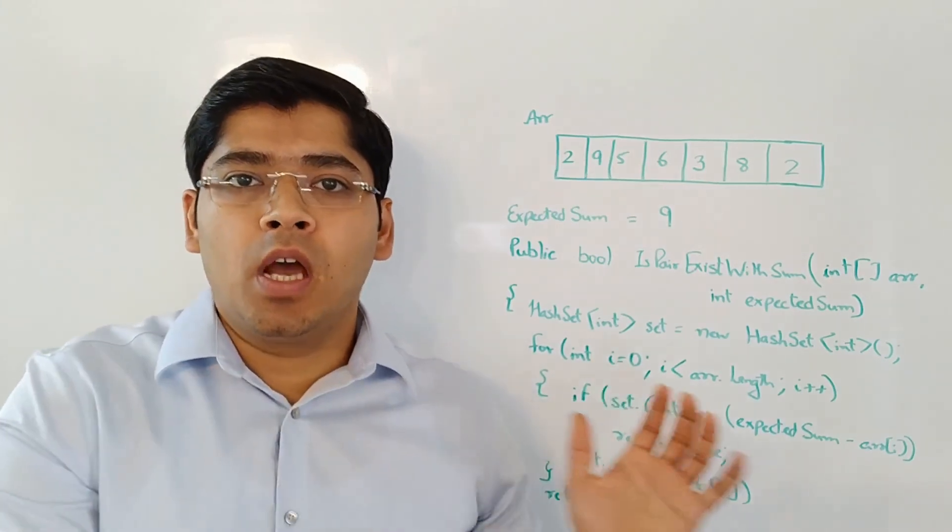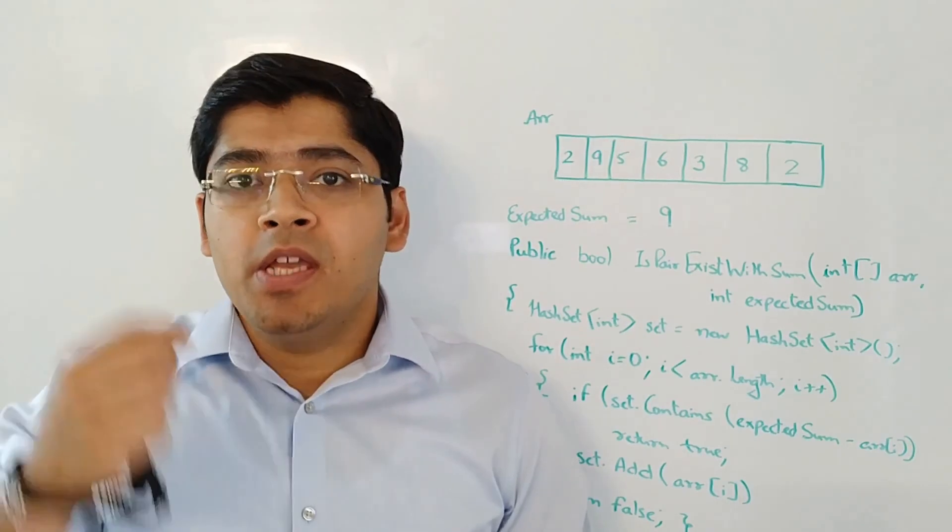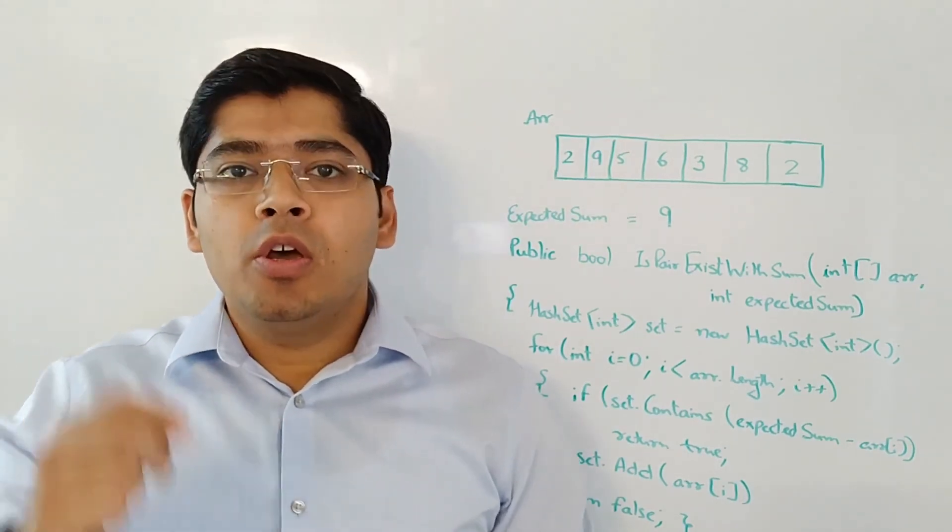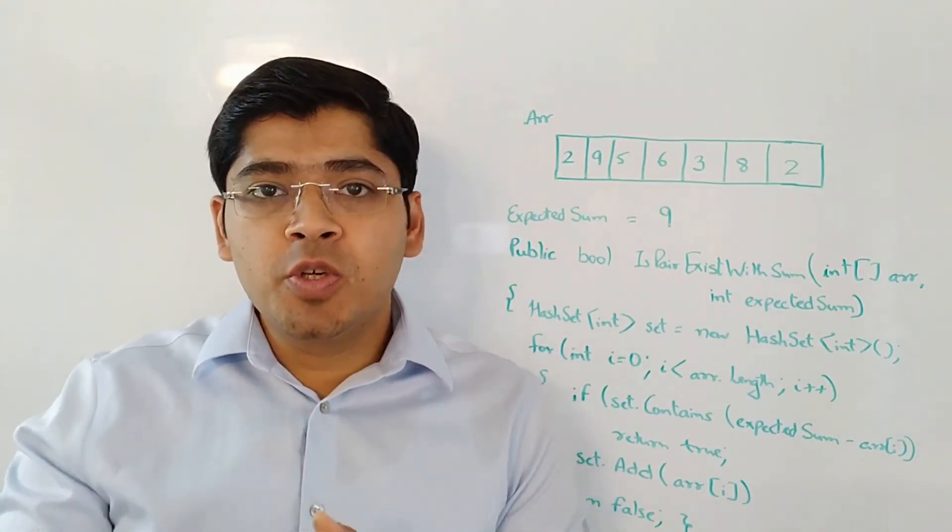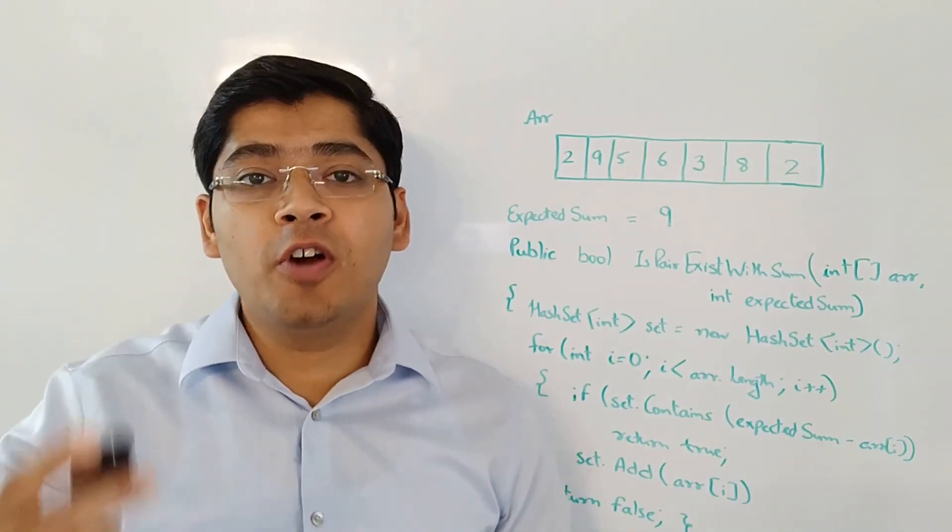Once you have written the code completely on the whiteboard, the next important step is to test the code. You need to make sure that it's doing what you intend it to do. If you have followed all these steps, then I would say that you have successfully answered the interview question.